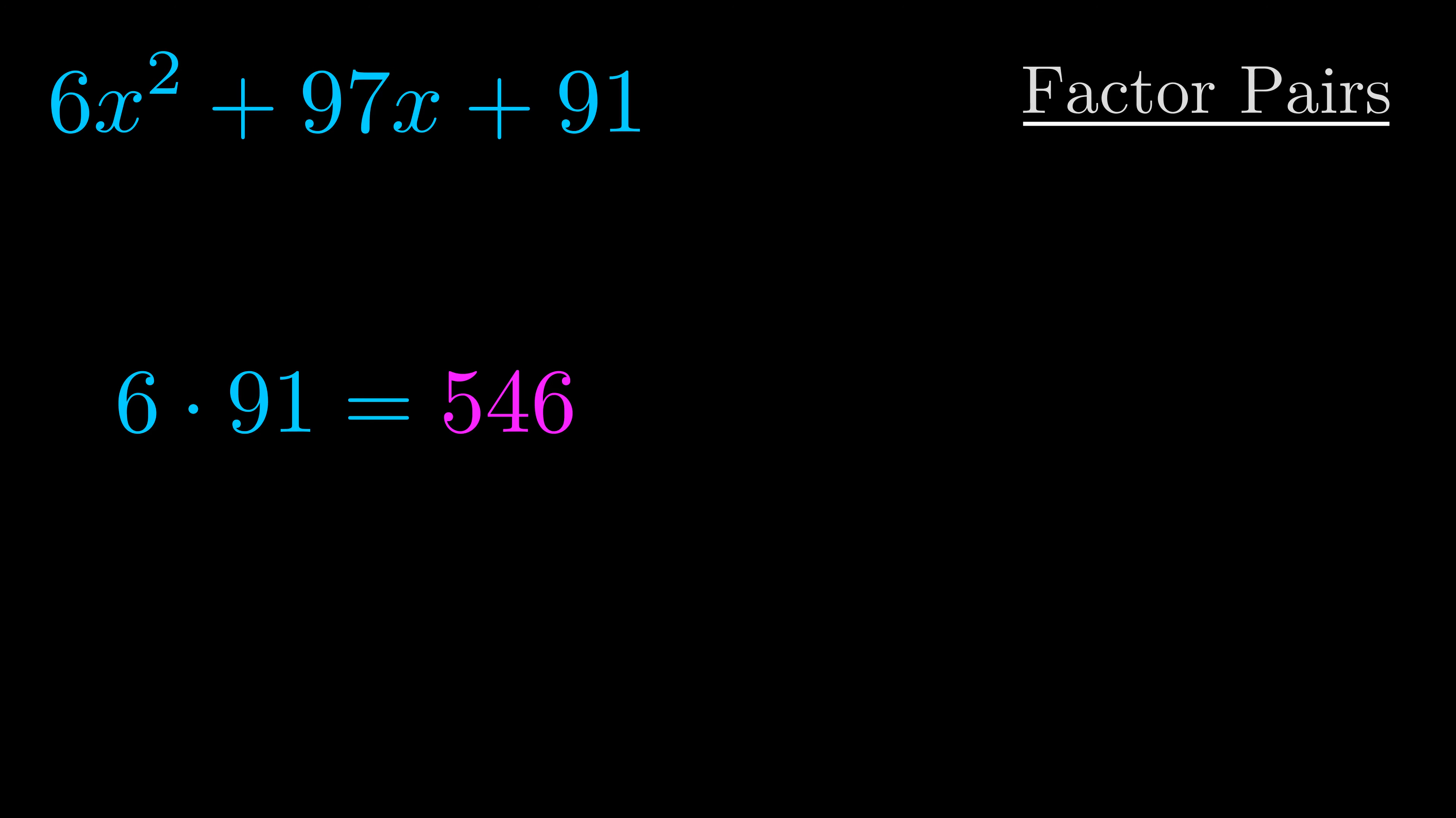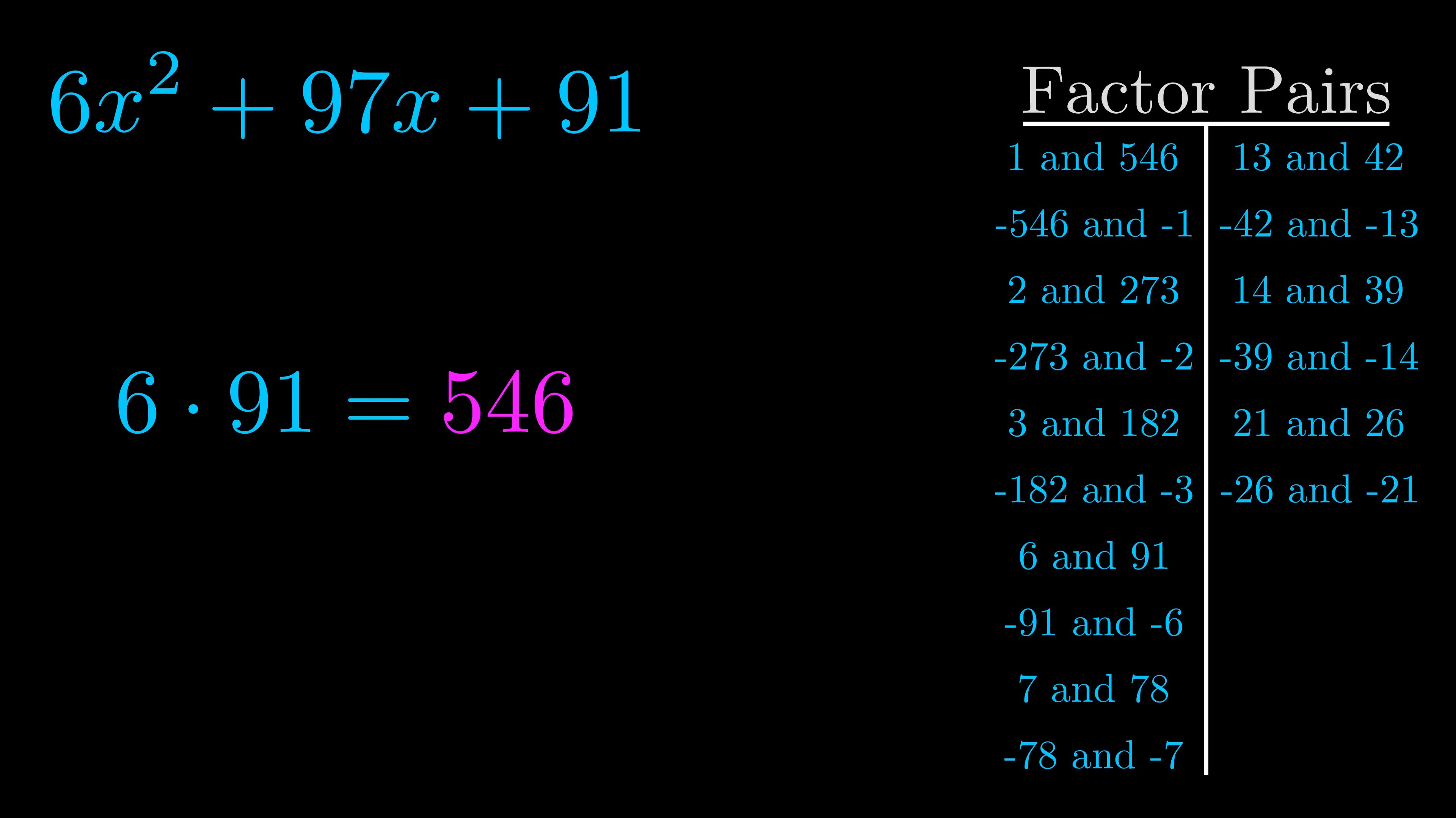Okay here's what I came up with. Now once you have these factor pairs the goal is to find which of these pairs adds to the b value.